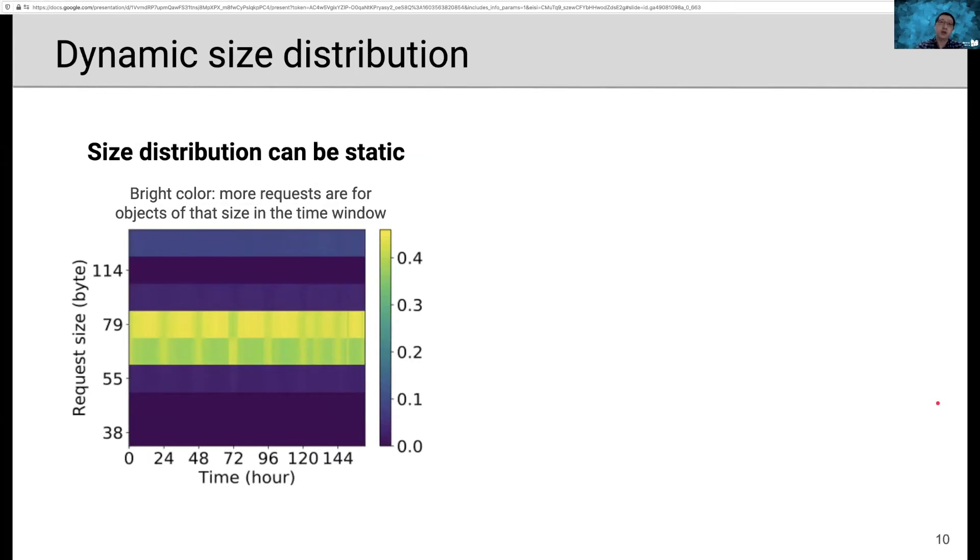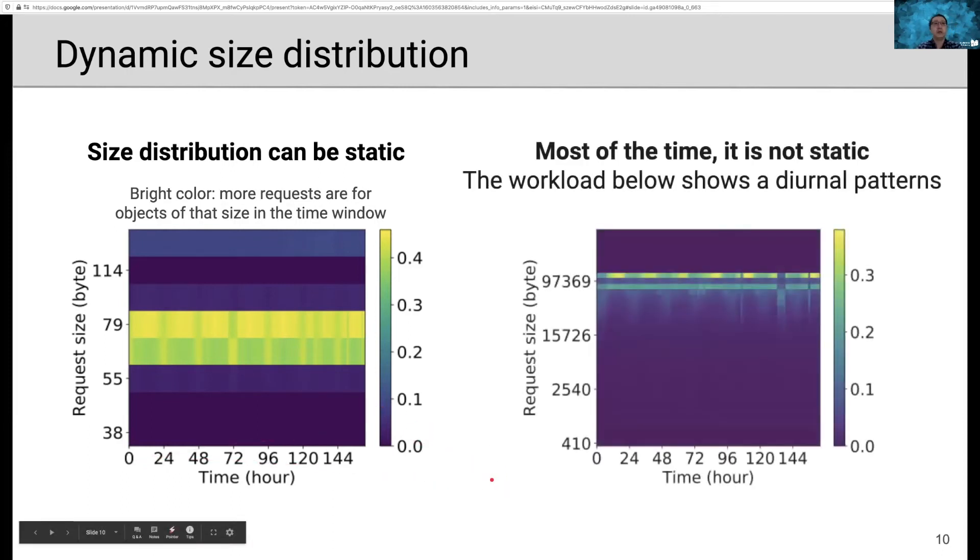So far, we have been looking at static object size distribution. However, size distributions are seldom static. In this figure, we show how the size distribution changes over time. The y-axis shows the request size. The x-axis shows the time. The color shows how many requests fall into each size bin in a time window. We observe that most of the requests for objects belong to these two size bins. And this figure shows that the size distribution can be static over one week. However, in most of the workloads, we observe that it's not static.